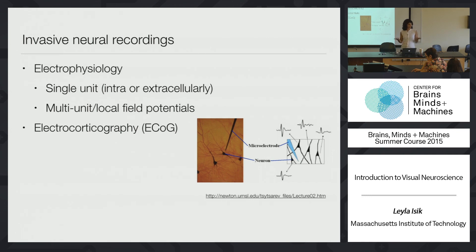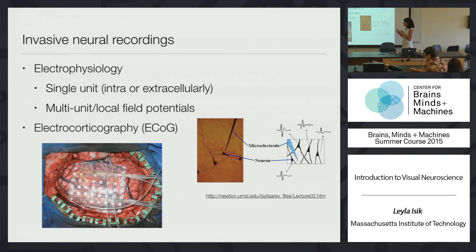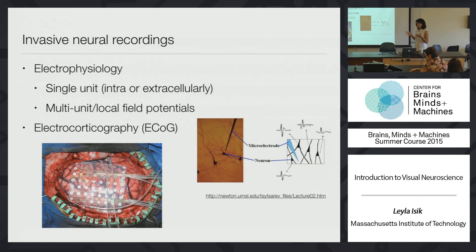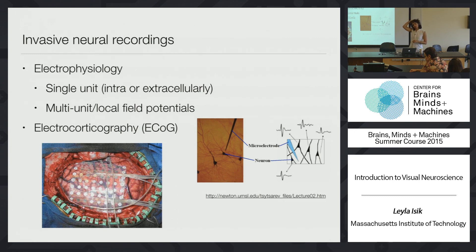You'll hear a lot about ECoG data from Gabriel and others. This is exciting — it's the opportunity to record from inside the human brain from patients who have pharmacologically intractable epilepsy. When surgeons want to resect a seizure area, they first map very carefully where seizures are coming from. To do that, they place a grid of electrodes on the surface of the subject's cortex and leave it there for several days while doing different types of mapping. This provides the opportunity for scientists like Gabriel to test neural activity in humans — a very rare opportunity to record invasively from humans. Since you're on the surface of the brain, this is not single unit activity; you get something more similar to an LFP-type signal.